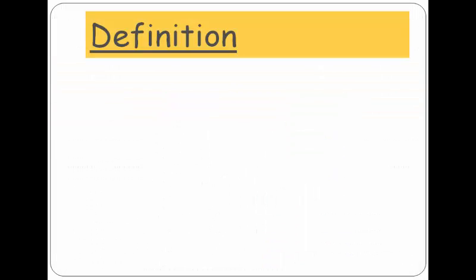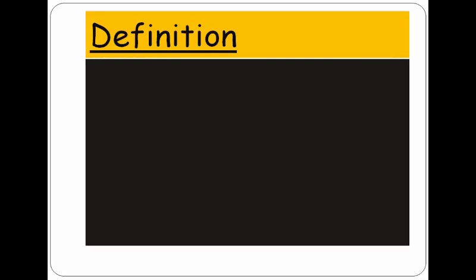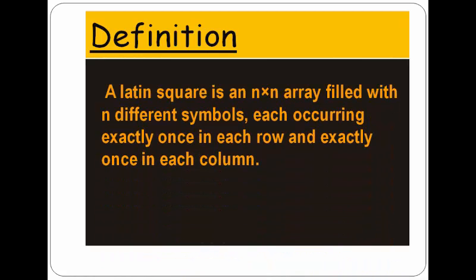So now let's come to the definition of Latin square. A Latin square is an N×N array which is filled with N different symbols, each occurring exactly once in each row and exactly once in each column.